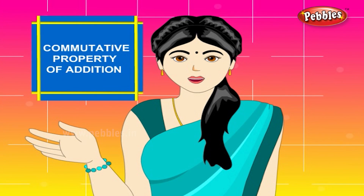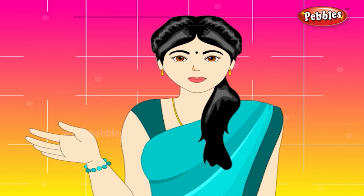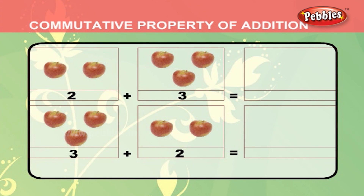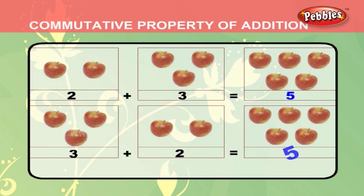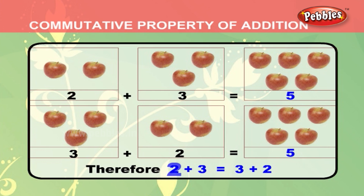Commutative property of addition. This means 3 plus 2 and 2 plus 3 gives the same answer, that is 5. Let us see this example. Here there are 2 apples plus 3 apples which is equal to 5 apples. In the same way, 3 apples and 2 apples will give you the same total of 5. Therefore, 2 plus 3 is equal to 3 plus 2.